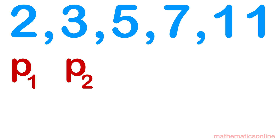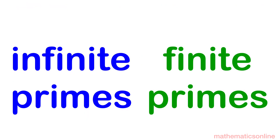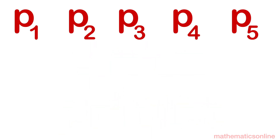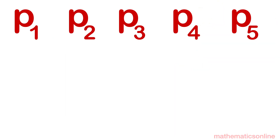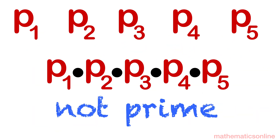Let's call these p1, p2, p3, p4, and p5. In math, only one of the following can be true: there are infinitely many primes, or there are a finite number of primes. If we find one to be false, the other must be true. So let's assume there are a finite number of primes, and p1, p2, p3, p4, and p5 are the only prime numbers in existence. Multiplying primes together produces numbers that are not prime — so p1·p2, p4·p5, and even p1·p2·p3·p4·p5 are not prime. We can do something as crazy as add one to the end, and say that p1·p2·p3·p4·p5 + 1 is also not a prime number.